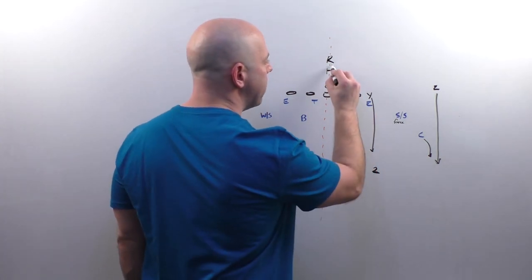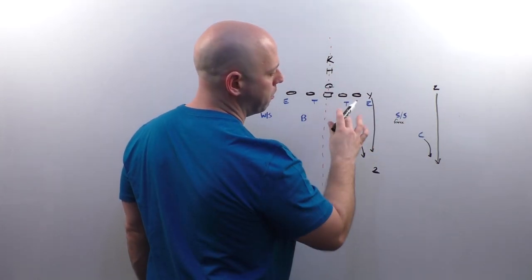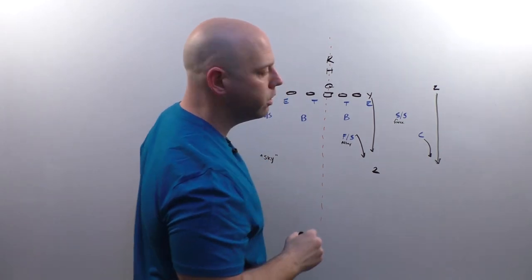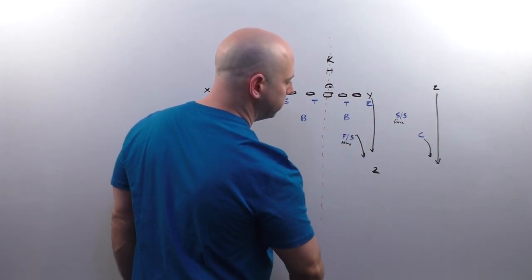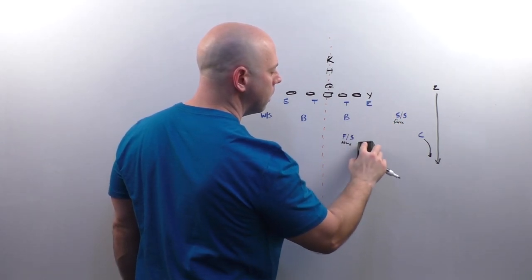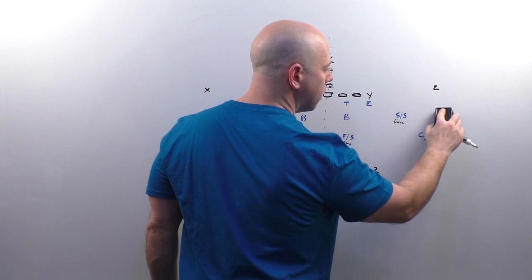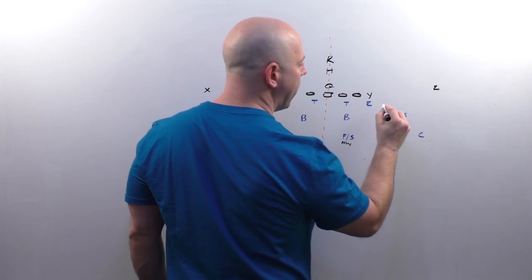So that's how we're going to pick that up. And then we usually get a late release to the flat by the R since we're not blitzing anyone. That would be your strong safety there. If you wanted to sit down and hook up the middle, that would be your backer. A second route combination, a curl flat.